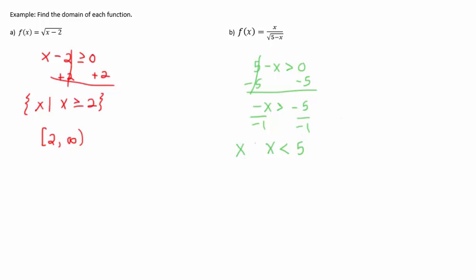And so I can set that up in set builder notation, or as interval notation talking about all the numbers less than five. So we go from negative infinity to five with a parenthesis because it's not equal to.